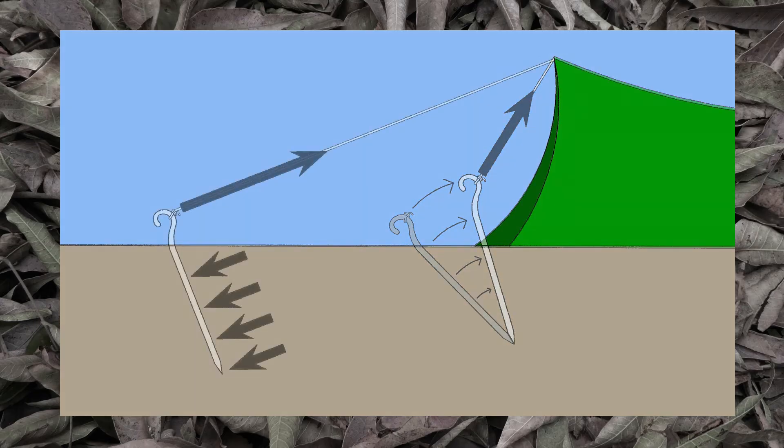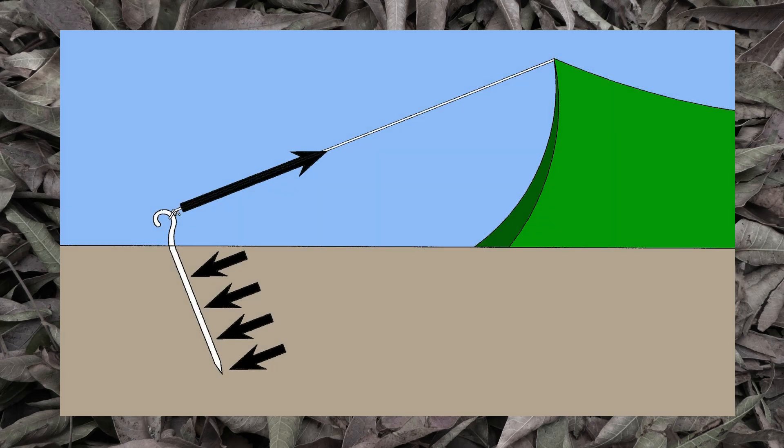In this picture, you again see the tent peg at the recommended 90 degree angle to the guy line. Because the tent peg is farther out from the shelter, the peg can be closer to vertical while still maintaining that angle.